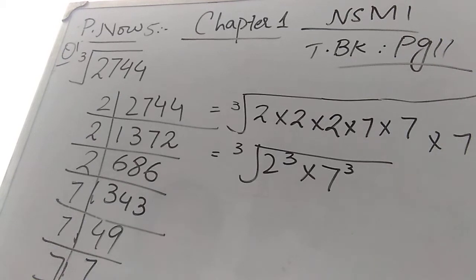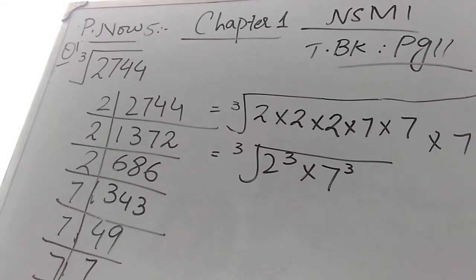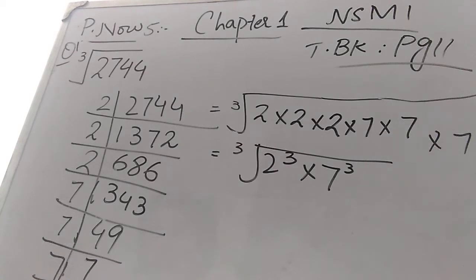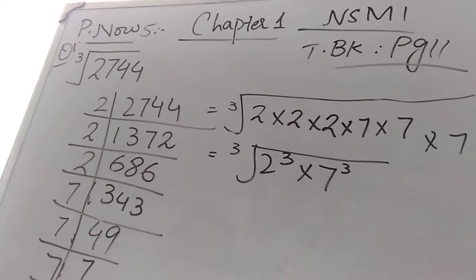Assalamu alaikum. Today I'm going to explain Practice Now 5, Chapter 1, SM1. The name of the chapter is Primes, Highest Common Factor and Lowest Common Multiple. Your textbook page is 11. The question is: find the cube root of 2744 by using prime factorization. Prime factorization means you have to find the prime factors of this number.